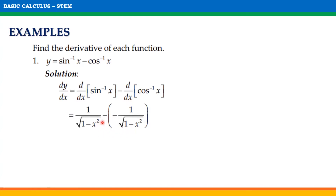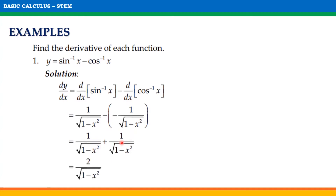negative times negative, we will get positive. Since we have the same denominators, what we need to do is to add the numerators. Thus, dy/dx of the given function above is equal to 2 / √(1 - x²).